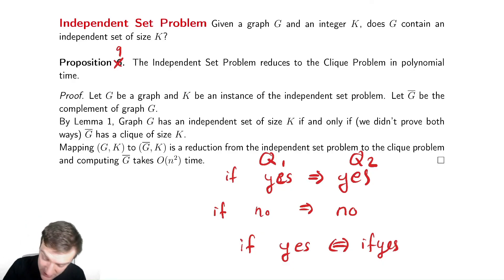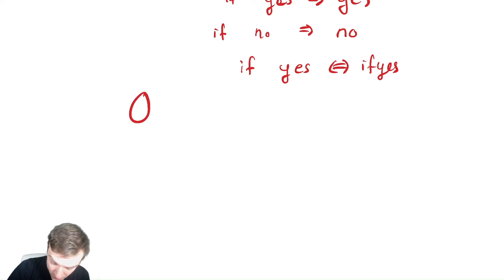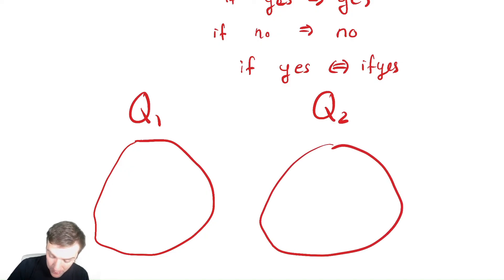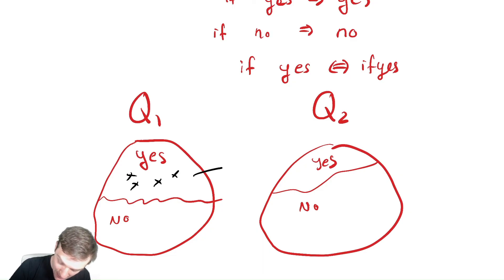A picture people often use for this is you have problem type Q1 over here, problem type Q2 over here. There's a big old domain of problems. Some of these problems have yes, some of these problems have yes, some of these problems have no, and some of these problems have no. What you want is that all of the things up here in the yes domain get mapped to this and all these things down here in the no domain also get mapped to no.